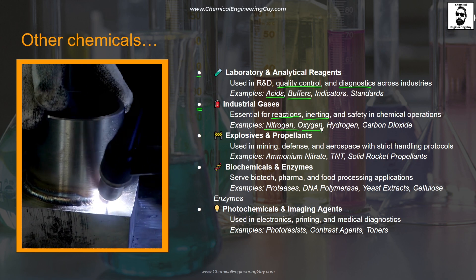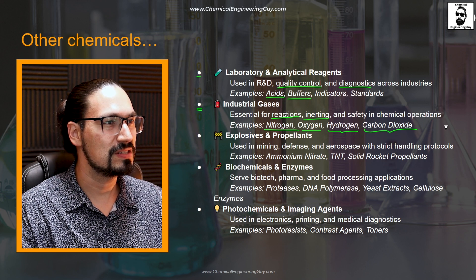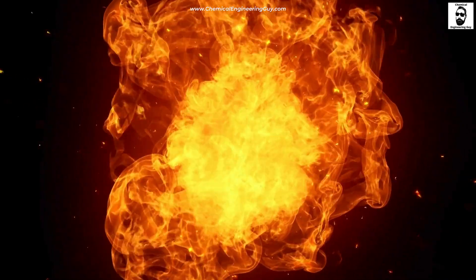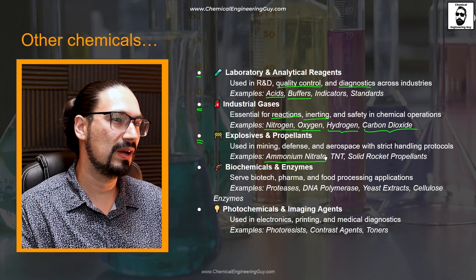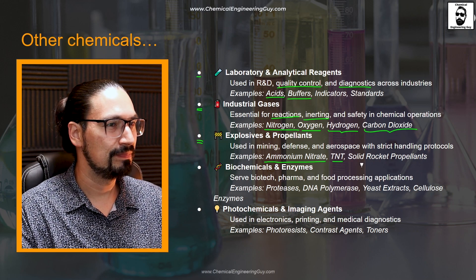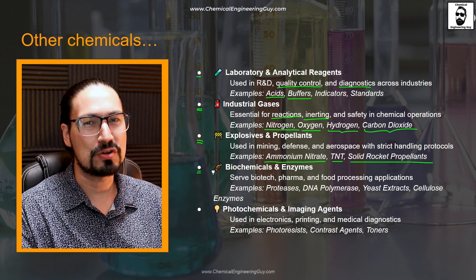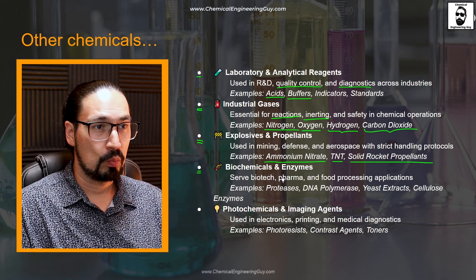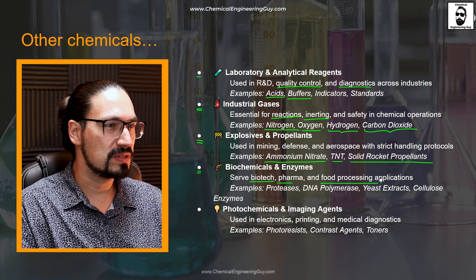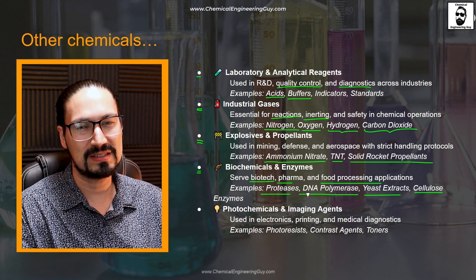The most common industrial gases are nitrogen and oxygen, but we're also talking about hydrogen, carbon dioxide, carbon monoxide, argon, xenon, and such. Explosives and propellants are used in mining, defense, aerospace, and construction — for example, ammonium nitrate, 3-nitrotoluene (TNT), or solid rocket propellants. Biochemicals and enzymes cover biotech, pharma, and food processing, for the production of specific materials such as cellulose, yeast extracts, DNA material, and proteases.